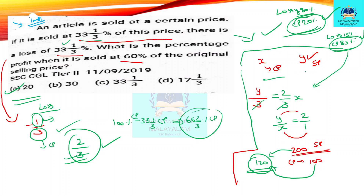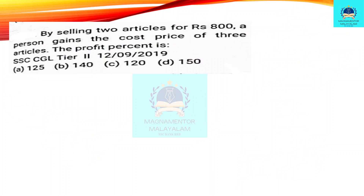Cost price and selling price ratio — let's check the value. By selling two articles for a certain amount, the person gains the cost price of three articles. The profit percentage is very important here. Let's set up the equation with 2 articles and 3 articles and their gain.